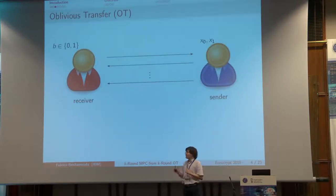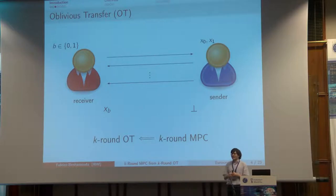Let's talk about the second part of the title: oblivious transfer. An oblivious transfer is a specific MPC protocol between a receiver and a sender. The receiver has a bit b, the sender has two messages X0 and X1. At the end of the protocol, the receiver should learn the message Xb, and the sender learns nothing. Obviously, OT is a specific MPC.